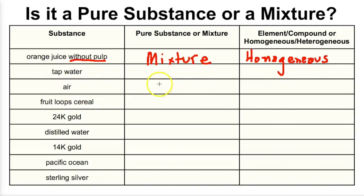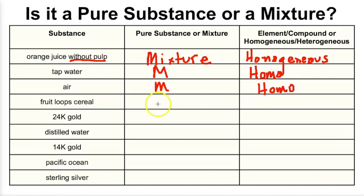Tap water is also going to be a mixture — a mixture of a bunch of different things — and so it's going to be a homogeneous mixture as well. Air is also going to be a mixture, and that too is going to be the same throughout, so it'll be a homogeneous mixture. Fruit loop cereal is a mixture for sure — it's completely different throughout — so that's going to be a heterogeneous mixture.